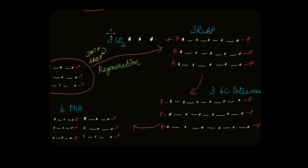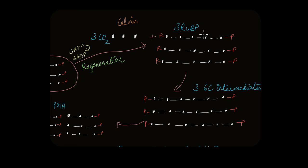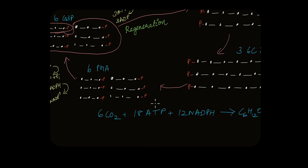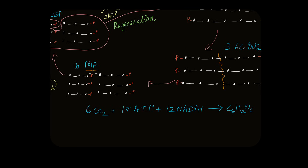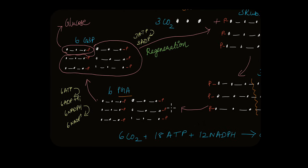Instead of just one molecule of CO2, three molecules of CO2 enter the Calvin cycle and react with three molecules of RuBP, giving three 6-carbon intermediates. These split into six molecules of PGA (18 carbons total). The six PGA molecules are converted to six G3P molecules, out of which just one goes ahead to make glucose — contributing 3 carbons.